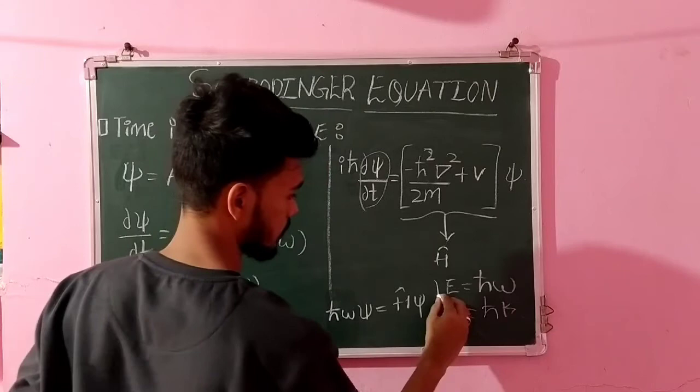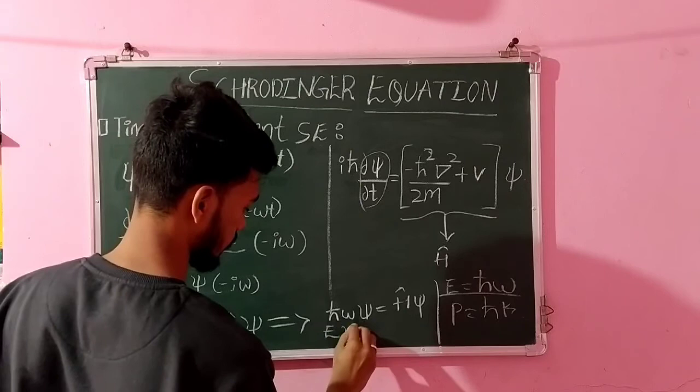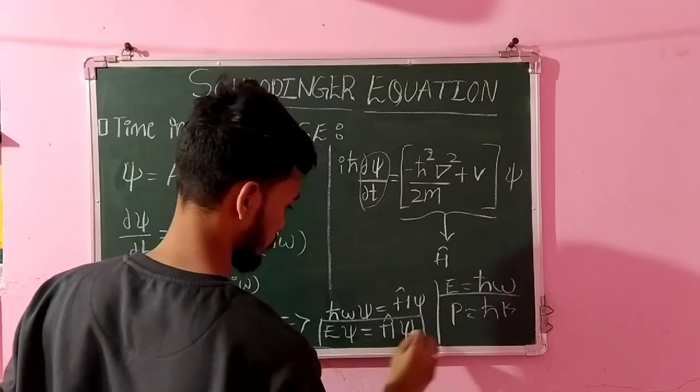So finally we can write E psi equals H cap psi, which is the time-independent Schrödinger wave equation.